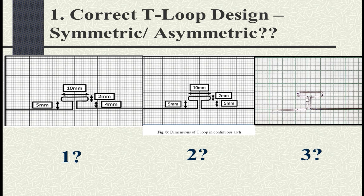In the third design, many people make the vertical height very large — here it is 12 mm. Twelve millimeters is good for increasing the moment-to-force ratio, but our vestibule allows only 10 mm of height, so this design is also not entirely correct. However, we can customize any of these designs as per our need.